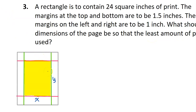I am working on this sketch. You can see the margins I have drawn, still in white. The yellow area represents where the text is to be — that is supposed to be 24 square inches of print. I'm defining a couple of variables: the width of the yellow rectangle I'm calling X, and the height of the yellow rectangle I am calling Y.